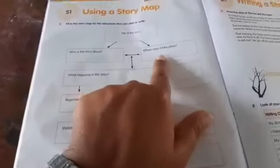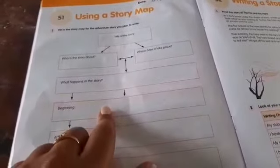This story is about lion. Where does it take place? In the jungle. What happened in the story? Now, you should write here. In the beginning, the lion was not close with the animals in the jungle.